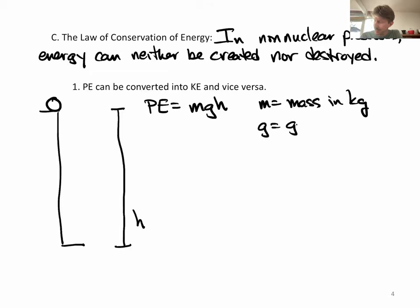G is gravity, 9.8 meters per second squared. And height is in meters, such that when we multiply these together, we get kilogram meters squared per second squared, which is also a joule. So we'll get joules when we use this equation.